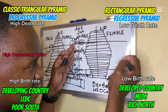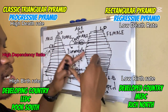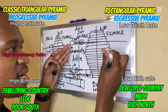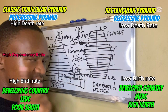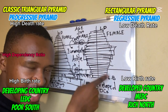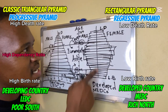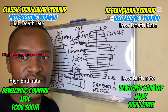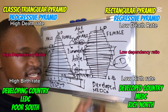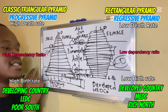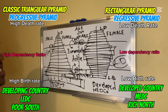In an MEDC — a rich country — the rectangular pyramid is broad at the center, meaning there are more economically active people. There is also a low birth rate, so fewer dependents are being added. This results in a low dependency ratio in MEDCs, compared to the high dependency ratio in LEDCs.